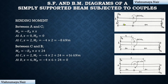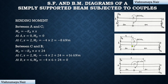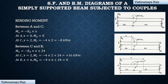The bending moment variation can be found similarly. Consider a section at distance x from end A and take the left portion. Ra tends to rotate the beam anticlockwise with respect to the section. Any anticlockwise moment on the left portion is negative, so Mx = −Ra × x. At end A, x = 0, so Ma = 0. At point C, x = 2 m, so Mc = −4 × 2 = −8 kNm.